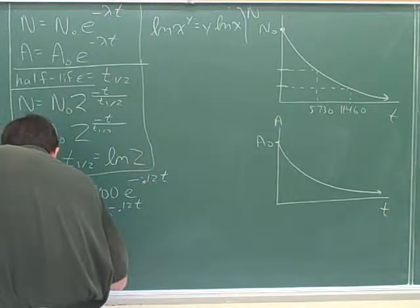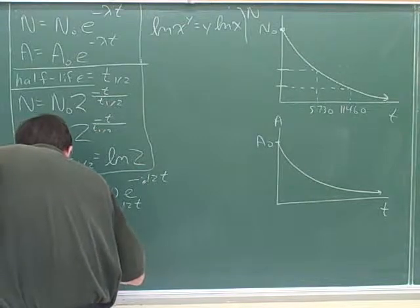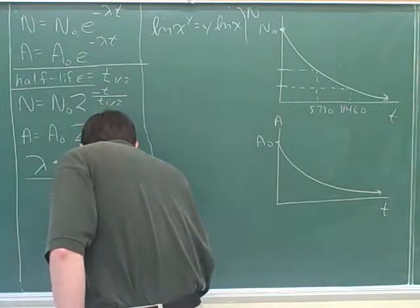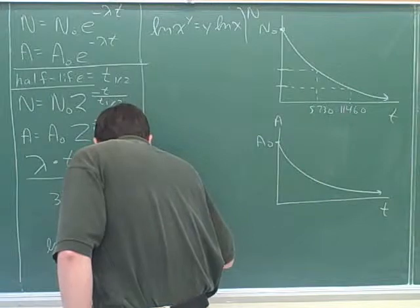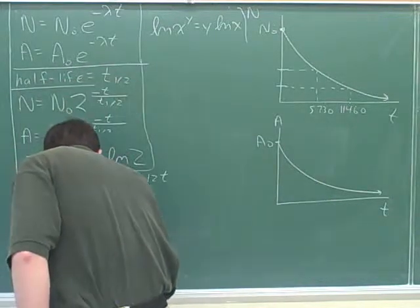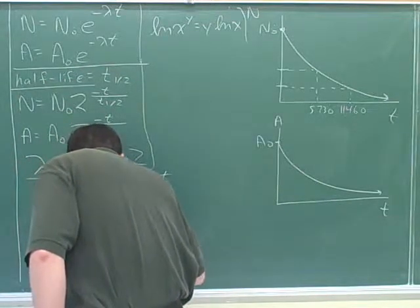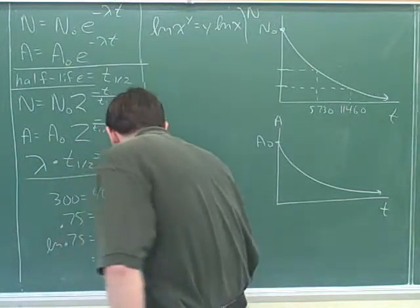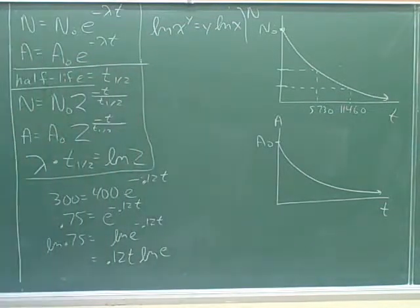ln of 0.75 equals negative 0.12t times ln of e. So far so good? Is ln of e 1?